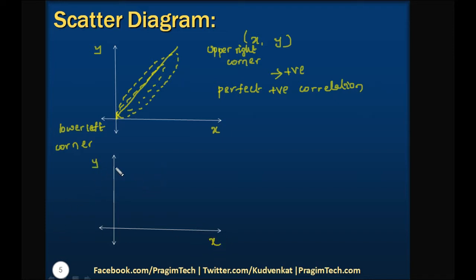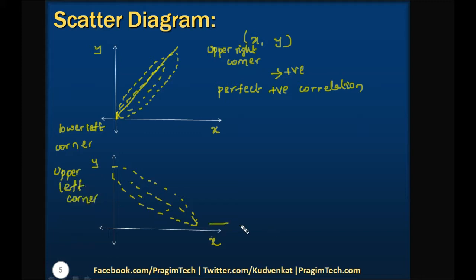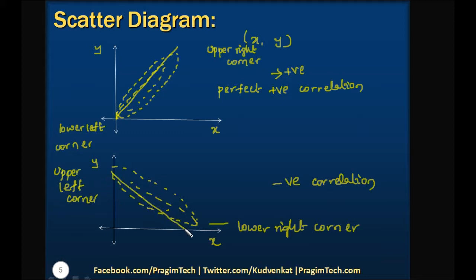If after plotting the points in the XY coordinate axis the plotted points go from the upper left corner to the lower right corner, then it is known as negative correlation. And if the plotted graph is a perfect straight line in that direction, then it is called a perfect negative correlation. From this graph, we can understand whether it is a positive or negative correlation just by looking at the diagram.